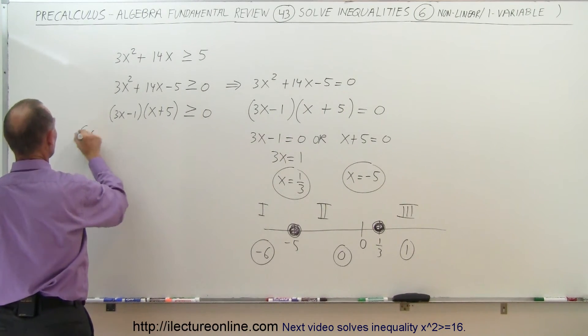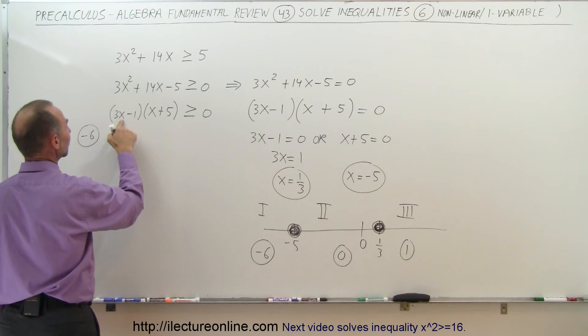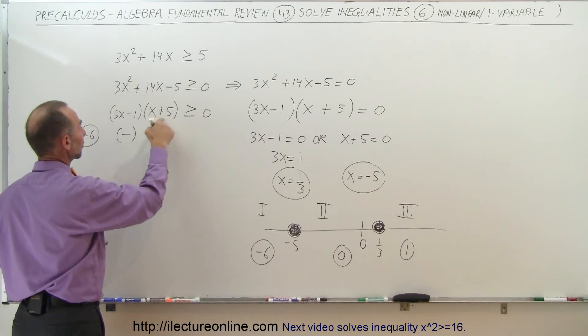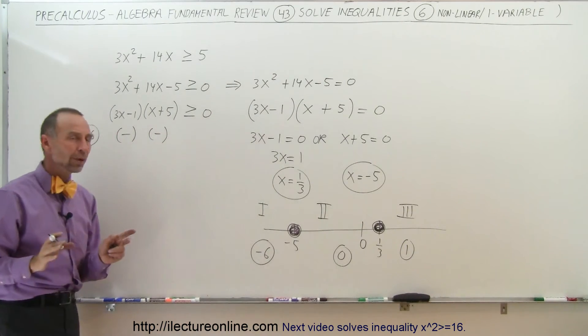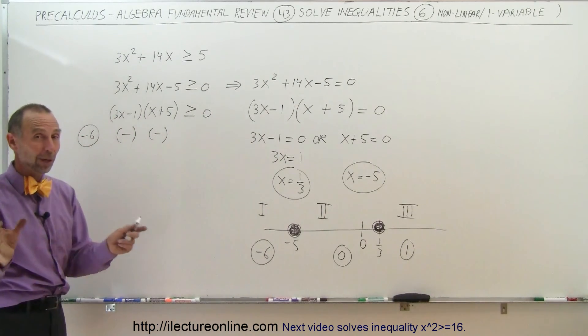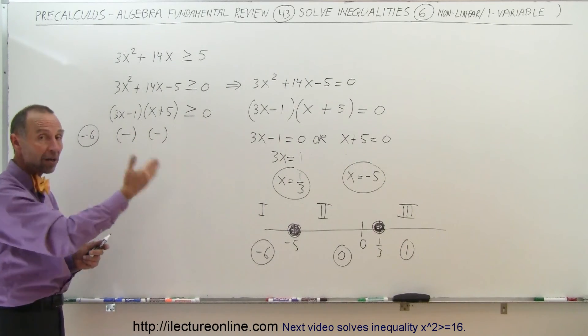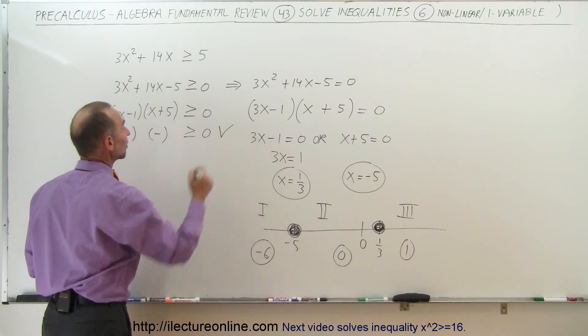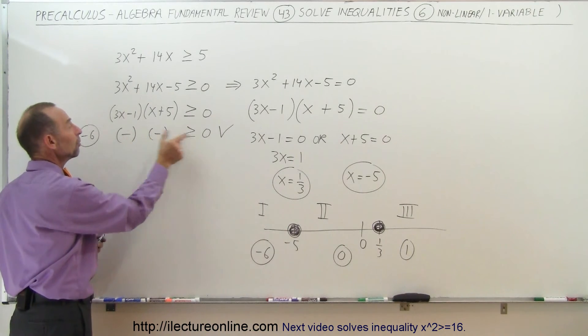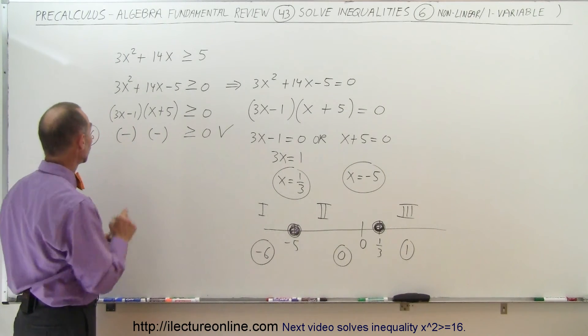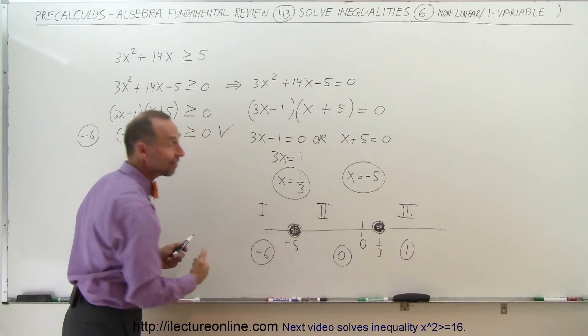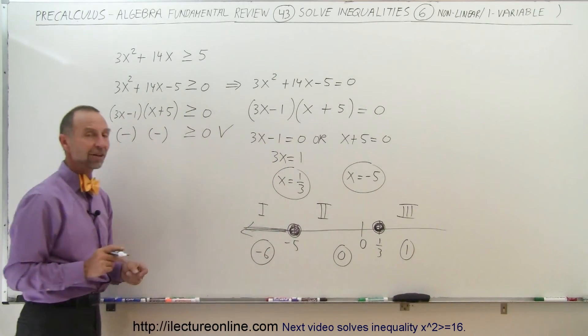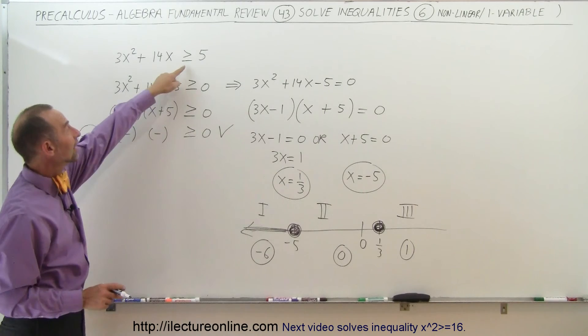Starting with negative 6. If I plug in negative 6 here, I get 3 times negative 6 is minus 18, minus 1 is minus 19. That's a negative number. If I plug in negative 6 here, negative 6 plus 5 is also a negative number. All I need to know is if these binomials are either negative or positive, because when I multiply them together, two negative numbers will give me a positive number, and a positive number is always greater than 0. So here we can say this satisfies the inequality because this will always be a positive number, therefore always greater than 0. So negative 6 is in the region that satisfies the inequality, which means everything to the left of negative 5 satisfies, including negative 5 because of the equal symbol.